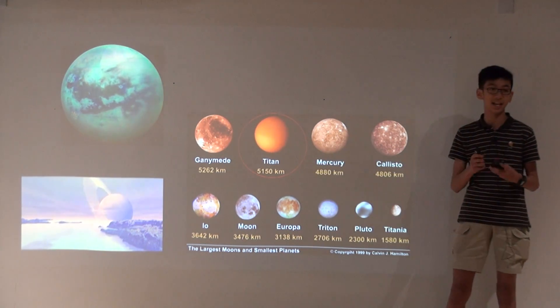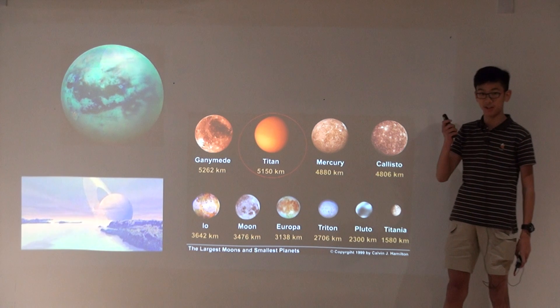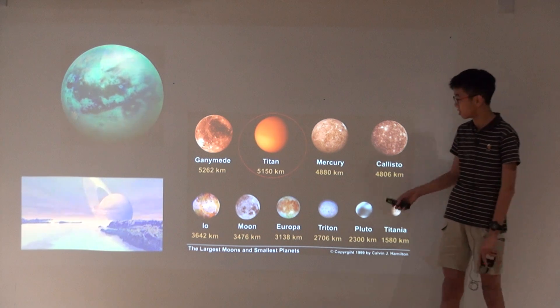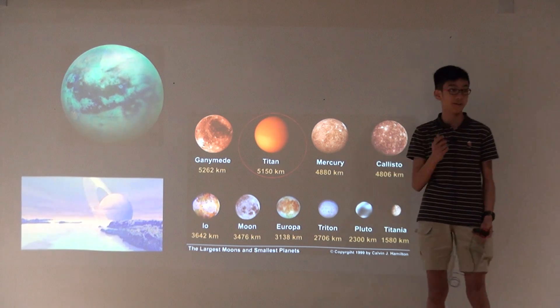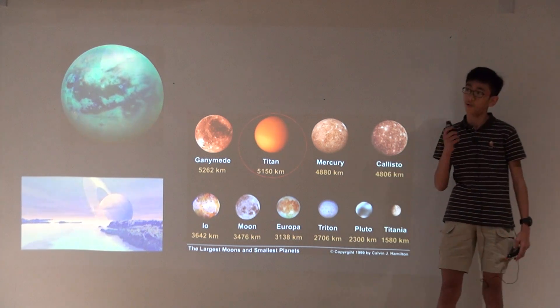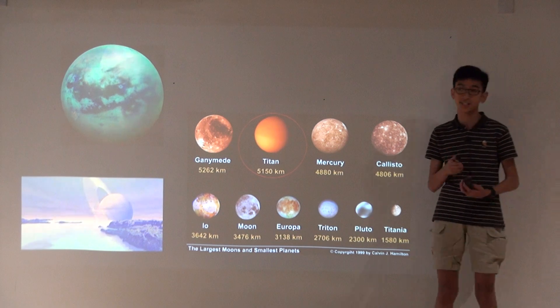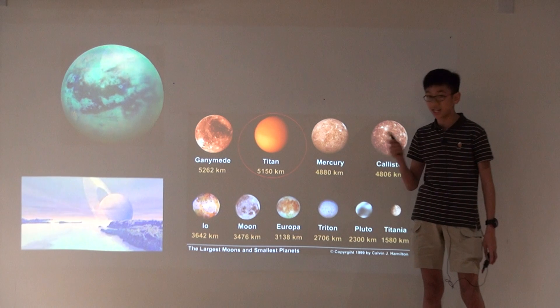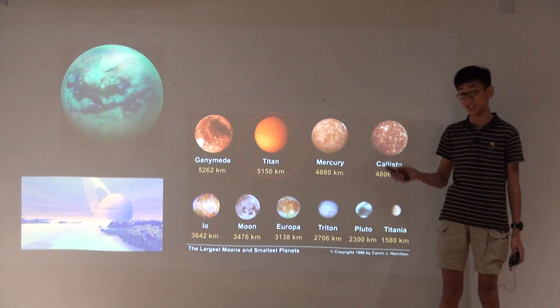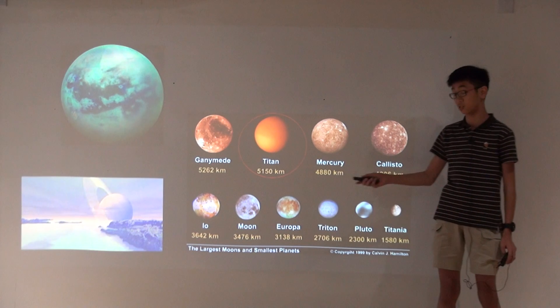So Titan is the second largest moon in the whole solar system, which the atmosphere is really similar to Earth. And Earth has around, I mean Earth is 60 kilometers to space, which Saturn is 10 times the length, which is 60,000 kilometers to space.